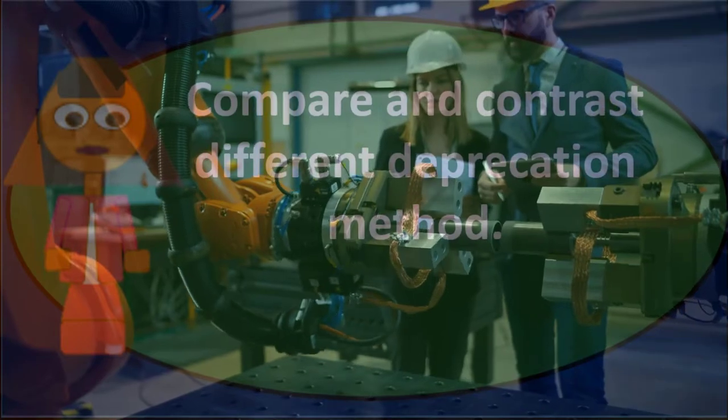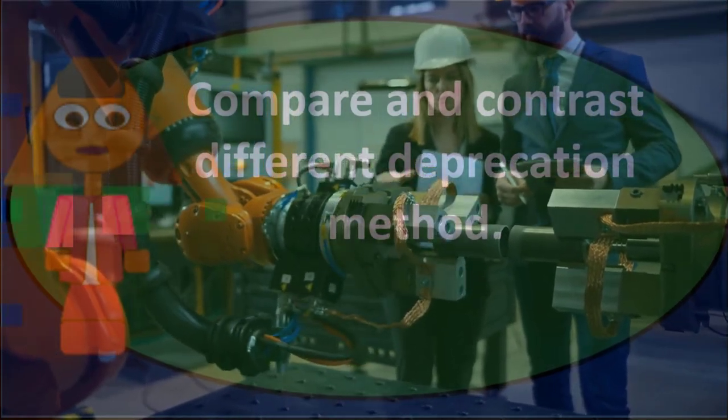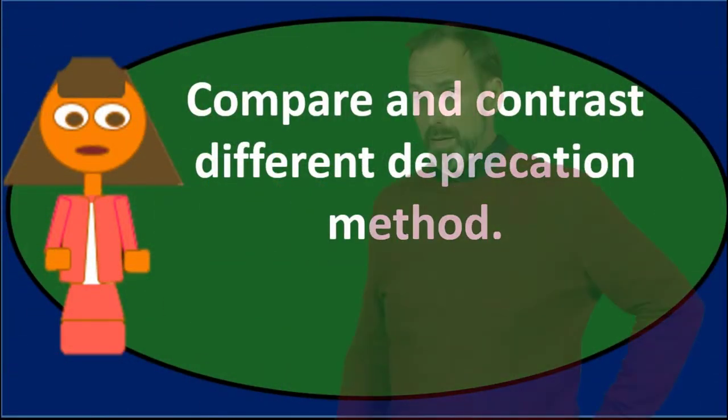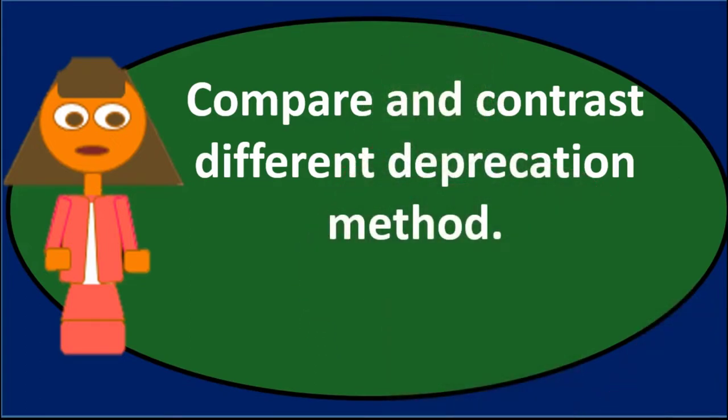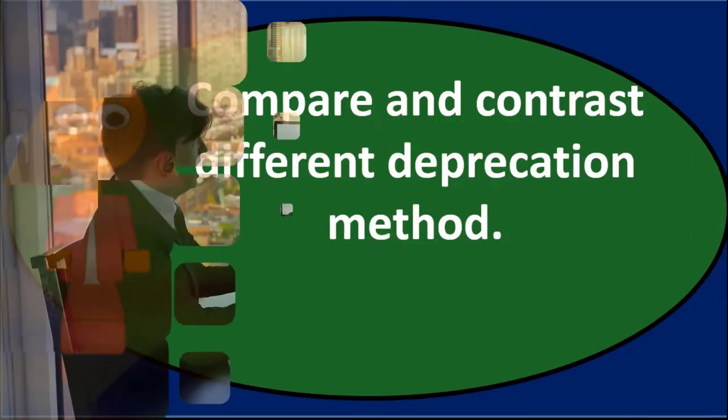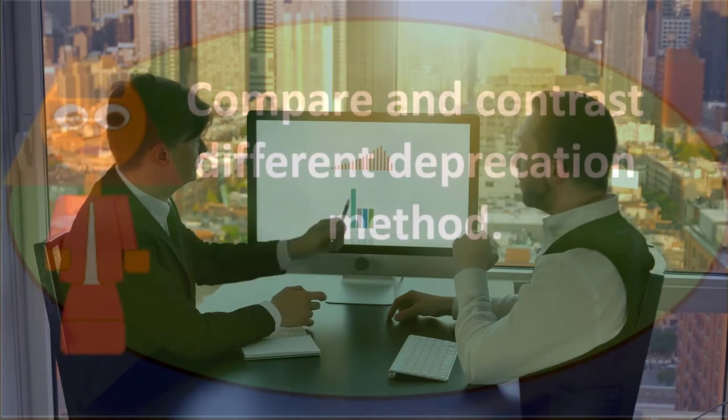It'll look like my net income is way lower than it should be in year one just because I purchased the equipment. It'll look like year two, I had a much better year when I really didn't, because I'm using the same piece of equipment in year two as I did in year one. So I don't want to allocate all of the costs, all of the expense of the purchase in year one, because it makes the net income look distorted and not comparable.